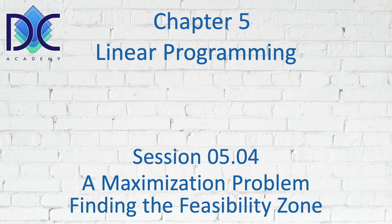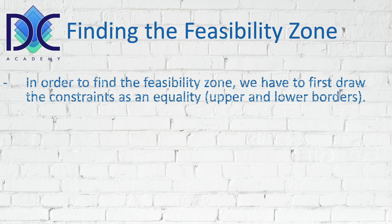We started with a maximization problem in the previous video. Now we are going to look at the next step where we're going to find the feasibility zone for this problem. When we look at finding the feasibility zone we have to concentrate on the different steps. First of all we have to draw the constraints — we take the constraints and express them as an equality, so we can draw them on the x and y plane and find the upper and lower borders of the feasibility zone.